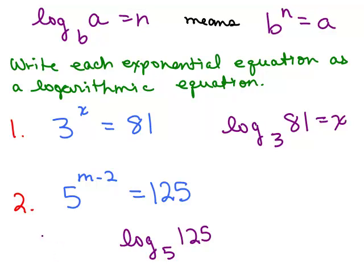I'm going to write this as m minus 2 equals the log of 125 base 5. You could have also written that as log of 125 base 5 is equal to m minus 2. So it's just getting practice going back and forth.